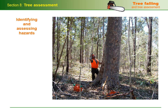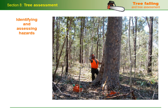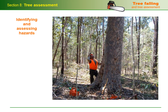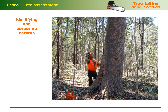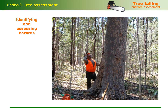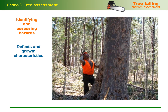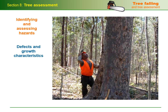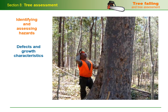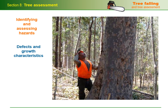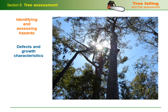Throughout this module we've talked about the central importance of identifying and assessing the hazards around you, both in the tree itself and in your immediate surroundings, before you make the first cut with a chainsaw. We've touched on some of the defects and growth characteristics in the tree that need to be taken into account, but we haven't discussed them in any depth. In this section we'll take a closer look at the main things you should watch out for when you're assessing a tree in preparation for felling it.